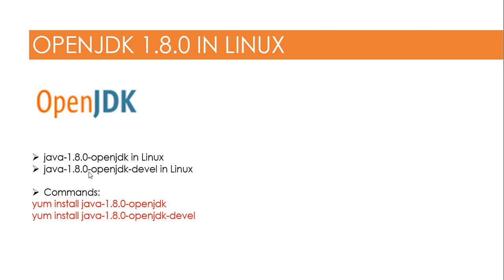Note that openjdk is just a runtime and does not include a compiler. openjdk-devel is used for compiling source code as well. In the next lectures we will see how to compile Java files with javac and how to run them. Thanks for watching.